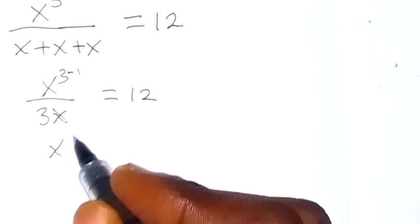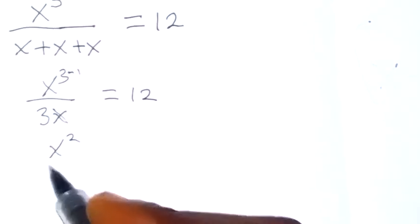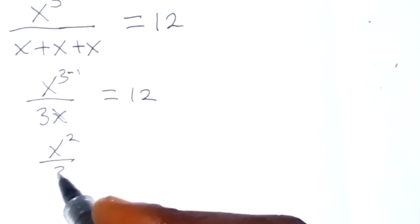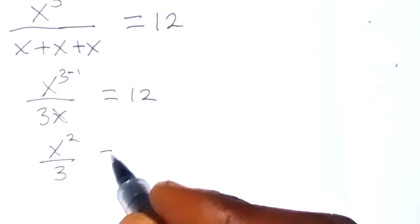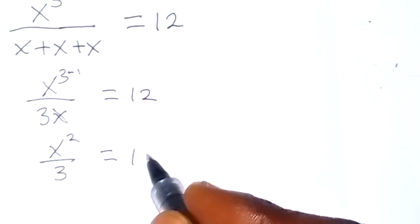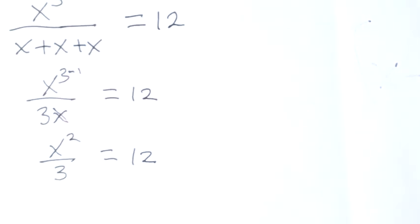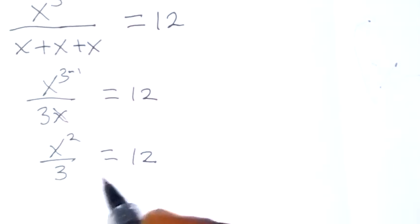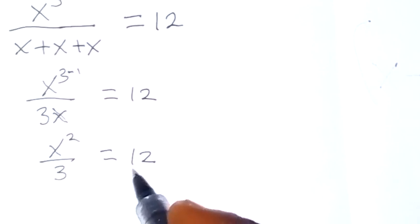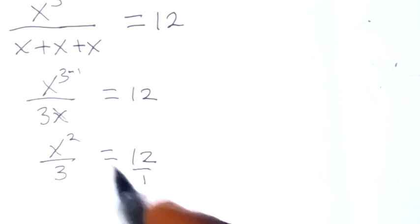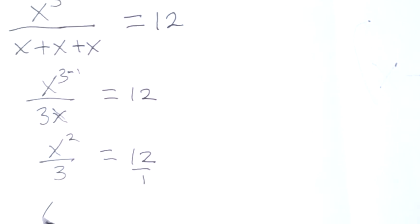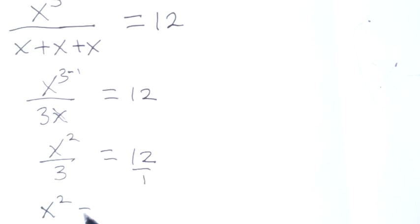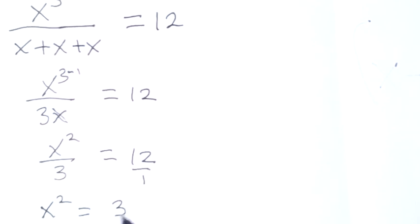So we now have x raised to the power 2 over 3 equals to 12. And from here, we can cross multiply. When we cross multiply, x squared times 1 is x squared, equals to 3 times 12, which is 36.